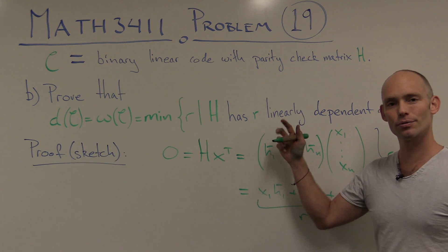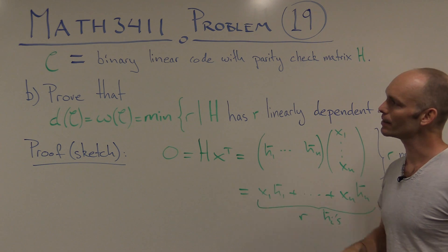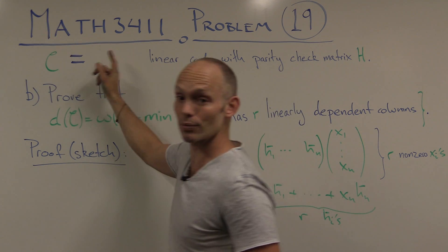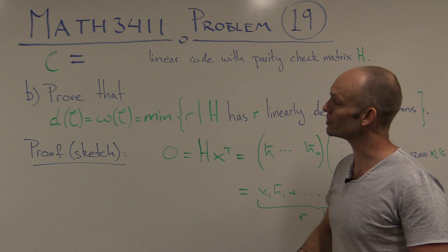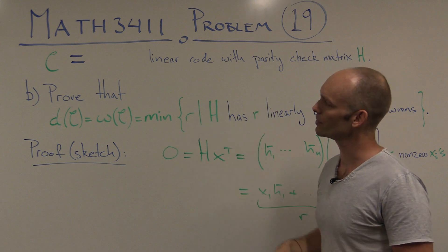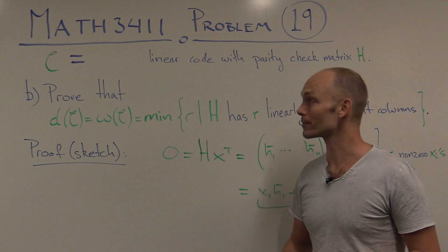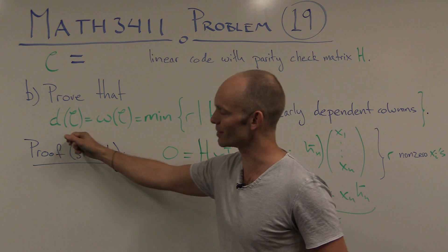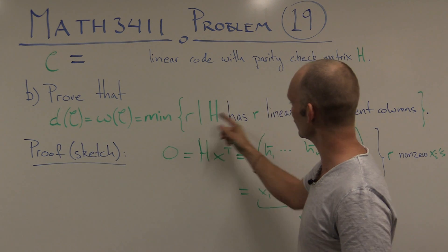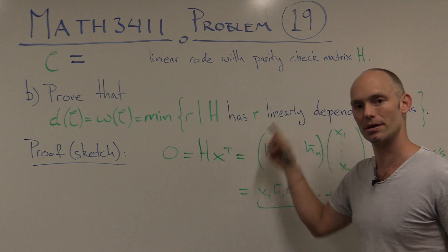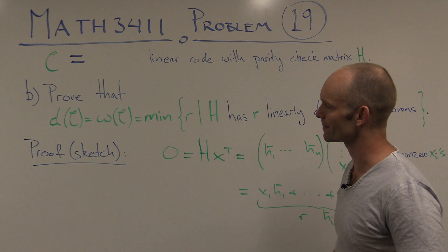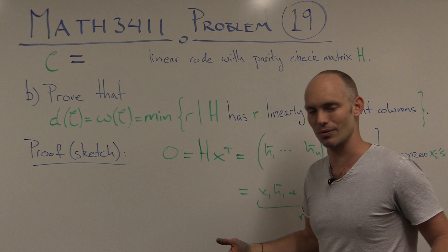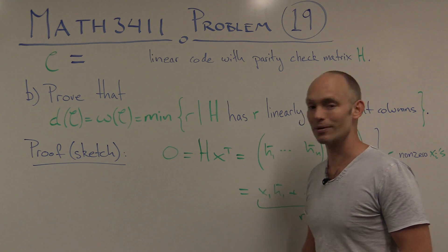If you think about both proofs in parts A and B, we never really used the fact that C was binary. So we don't have to think just about binary linear codes — we could take any linear code over a field, and all of this would still be true. The minimal distance equals the minimal weight, which is the smallest number of linearly dependent columns in a parity check matrix for the code. This is true in quite broad generality. Thank you very much.